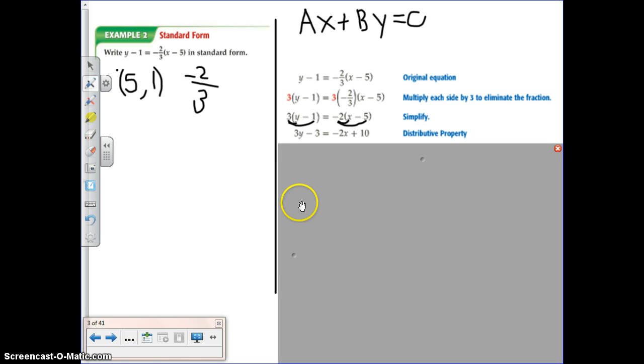So now we're getting close. We want to make sure that our Ax and our By are on the same side. So I'm going to add 3 to both sides. And now 13 here is my C because it doesn't have a variable connected to it, so that's my C.